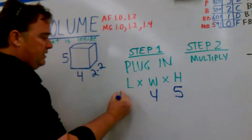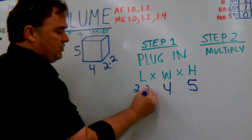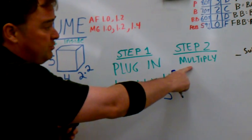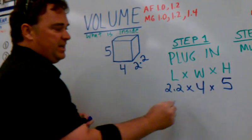Our step number 2 is, right over here, multiply. So, let's take this one first, since it's easier. 4 times 5. And we all know that that is? 20.